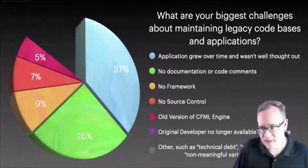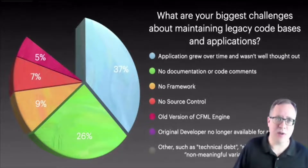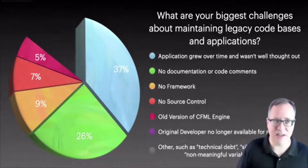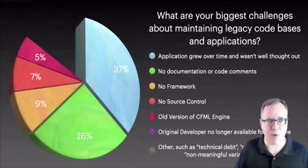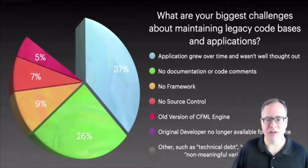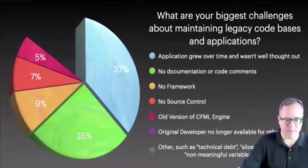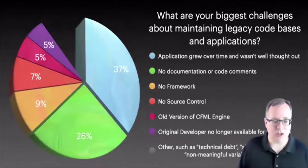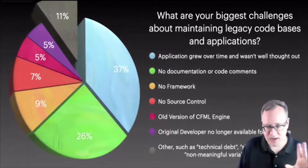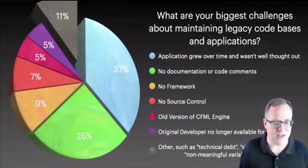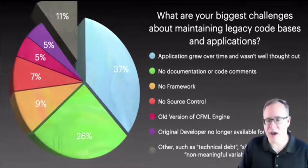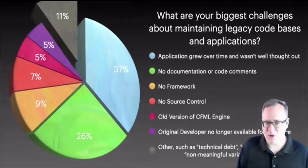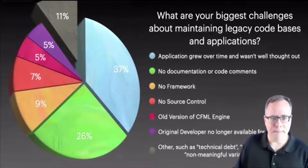There are still other frustrations, like running an old version of the CFML engine — still running a ColdFusion 9 application, or not being able to use a particular function because it wasn't introduced until ColdFusion 11. There are problems when running older versions of CFML that take away modernization opportunities. Also, the original developer no longer being available for reference. The last section — 'other' — included things like technical debt, siloed knowledge, and non-meaningful variable names.